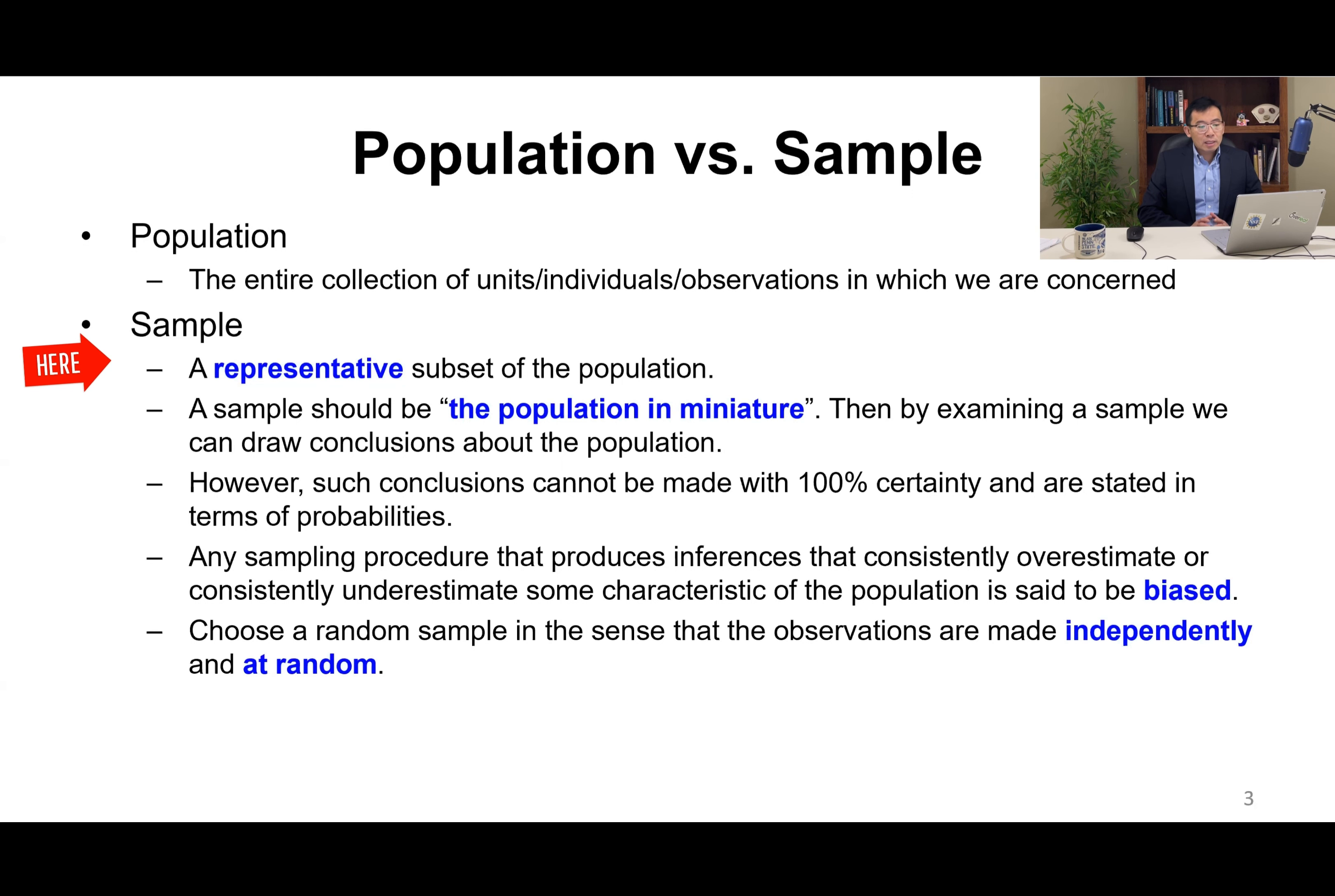However, such conclusions cannot be made with 100% certainty and are stated in terms of probability. Any sampling procedures that produce inferences that consistently overestimate or underestimate some characteristics of the population is said to be biased. We choose a random sample in the sense that the observations are made independently and at random.